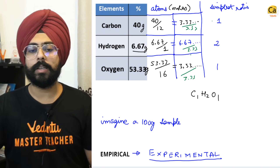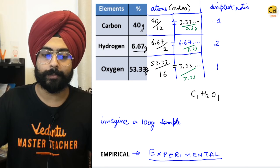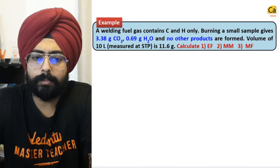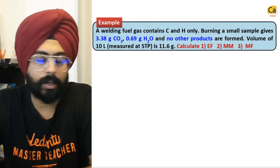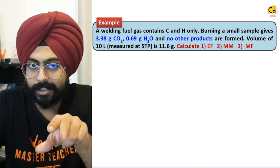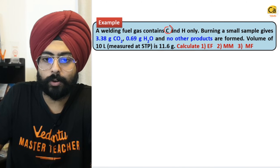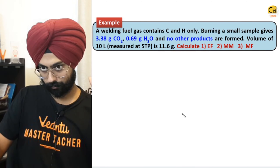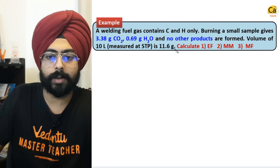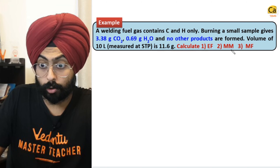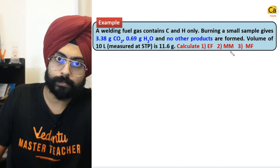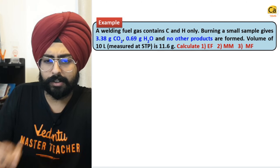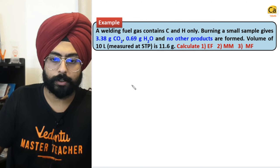In old days, all we could do was this calculation to get the simplest ratio — there was no other way to figure out the complicated ratio unless we did some other experiment. That is why it is known as an empirical formula. Now let's try to do a question that involves a little bit of POAC as well.